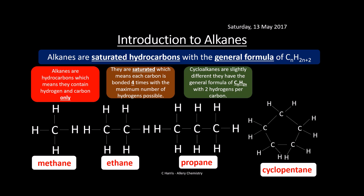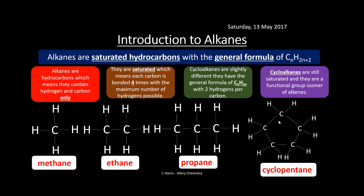Cycloalkanes are a little bit different though. They don't have the general formula CₙH₂ₙ₊₂ — they actually have the same general formula as an alkene, mainly because they loop around on each other and lose two hydrogens to enable them to do that. There's an example of cyclopentane — basically pentane looped around in a circle. Cycloalkanes are still saturated though, even though they don't have the same general formula. Each carbon has maxed out its bonds with hydrogens, so there are no double bonds — all single bonds.